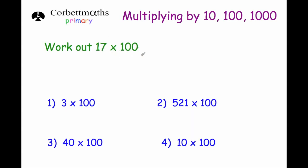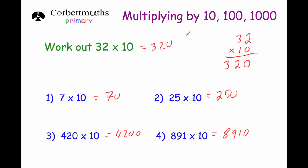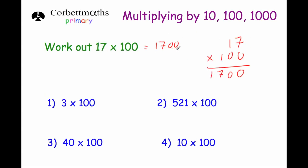Now let's look at how to multiply whole numbers by 100. If we take 17 and multiply by 100 — the 100 has no units and no tens, so we put two zeros down, giving us 1700. Just like multiplying by 10 where the shortcut was to add one zero on the end, if we multiply whole numbers by 100 we can add two zeros on the end. The digits get 100 times bigger, moving two columns to the left. So 3 times 100 is 300.